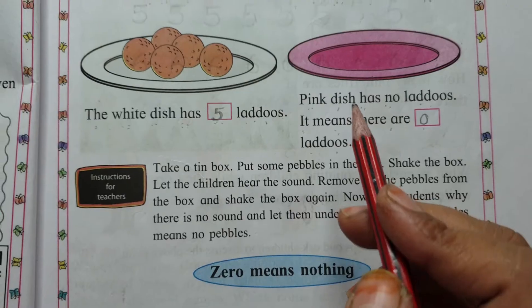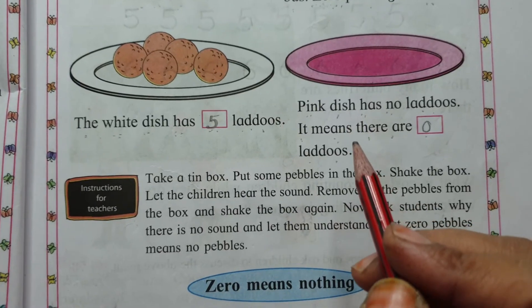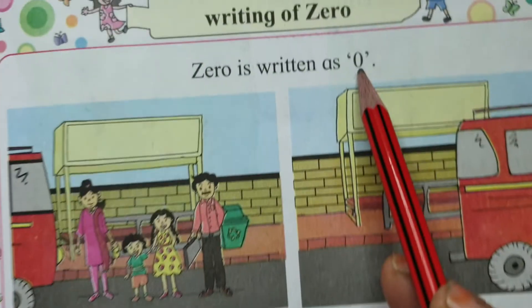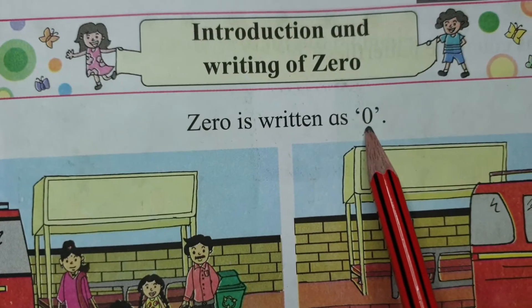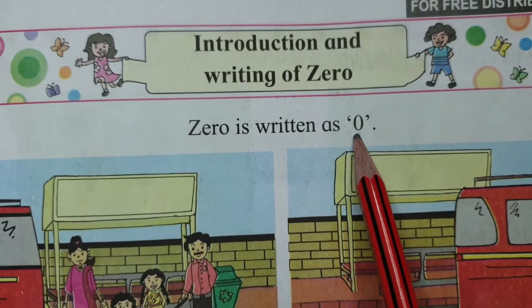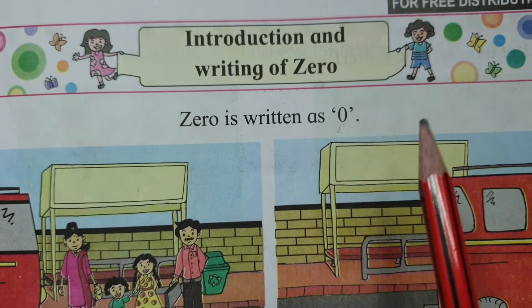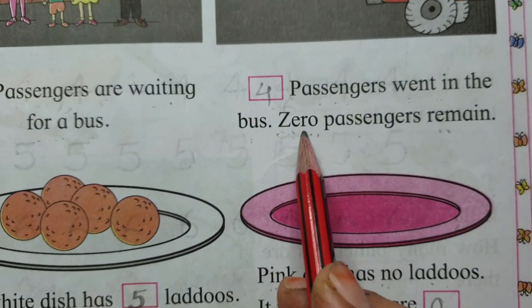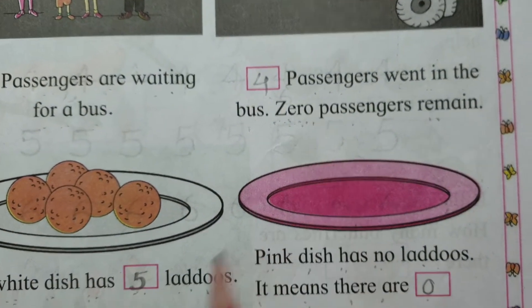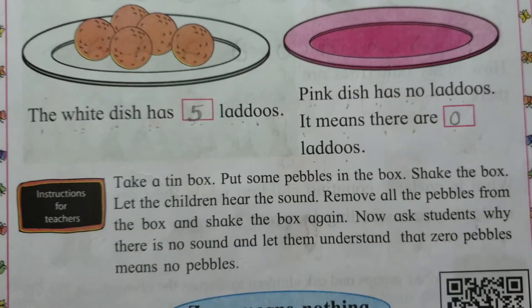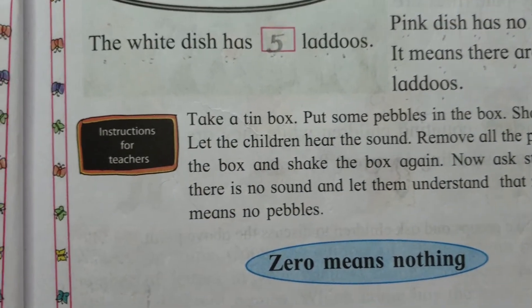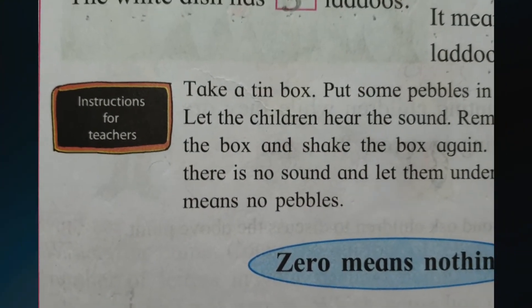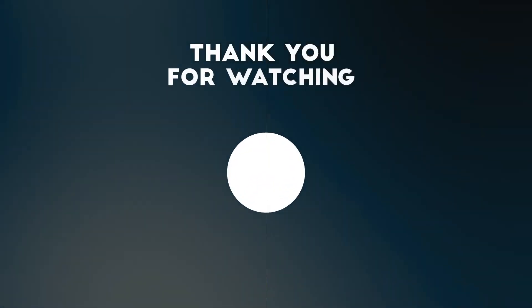0 means nothing, and it is written like this. In digit we write it like this, and in words we write Z-E-R-O. Okay students, it's time to say goodbye to you. Thank you so much!